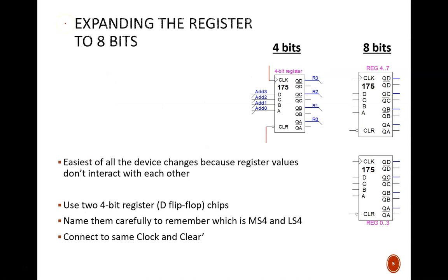First, the register. This is the easiest device to expand because all the bits work independently of each other. This 175 device simply holds 4 separate flip-flops, and those flip-flops don't interact directly with each other. The left image shows the previous design with 4 bits; the right image shows the new design with 8 bits — we just used two devices. They should both be connected to the same clock and clear signals. The input and output pins must be carefully named to make sure they feed into the correct adder and comparator ports. We will use the convention of most significant bit at the top counting down to least significant bit at the bottom.